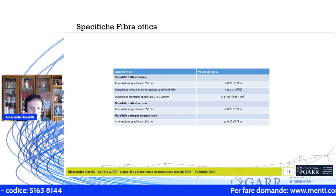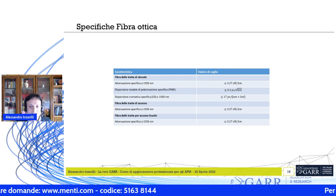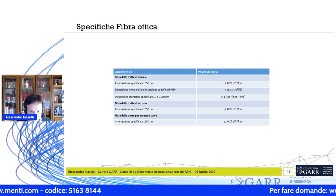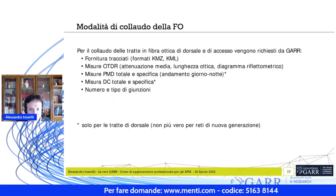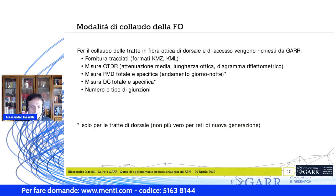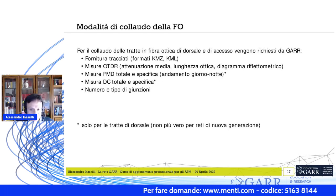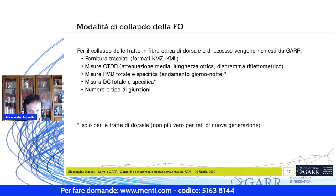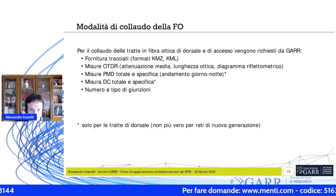Tutte le caratteristiche delle fibre ottiche sono misurate a 1550 nanometri, la finestra di minima attenuazione nella trasmissione dei segnali su fibra ottica, intorno alla quale funzionano tutti i sistemi trasmissivi moderni. La certificazione delle fibre ottiche è un elemento fondamentale della rete: si richiede tutta una serie di misure agli operatori per certificarne la bontà del funzionamento.